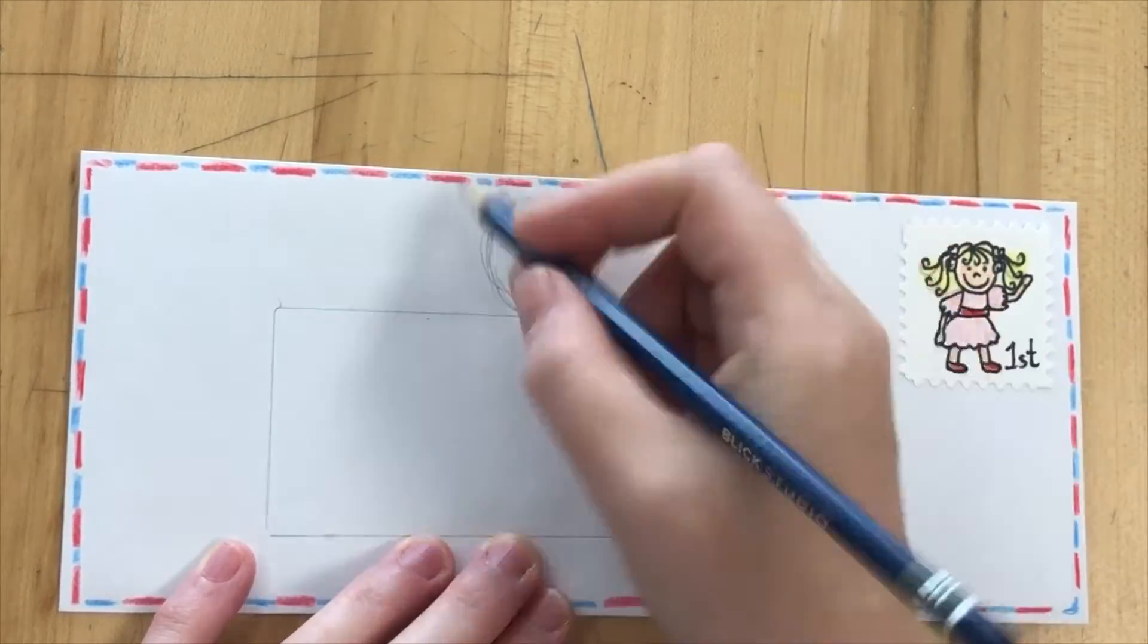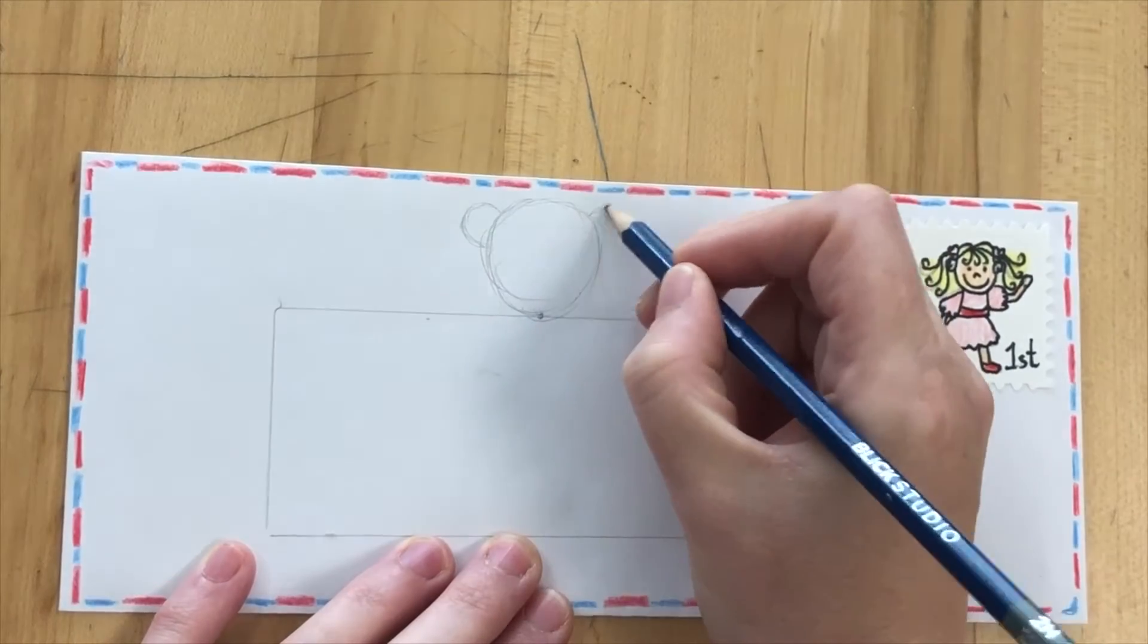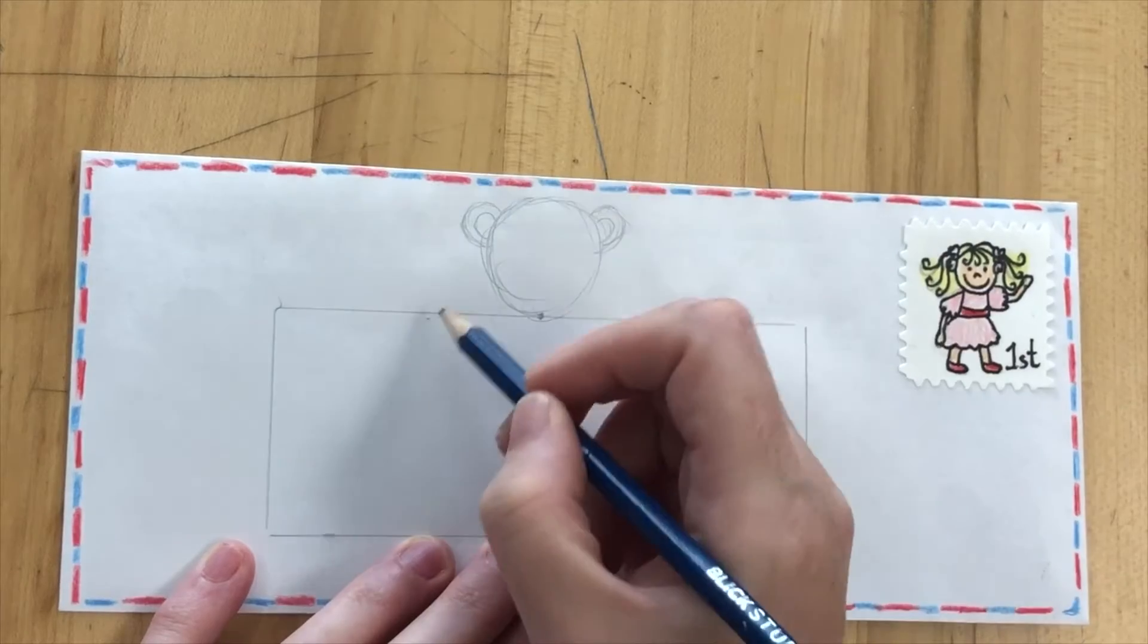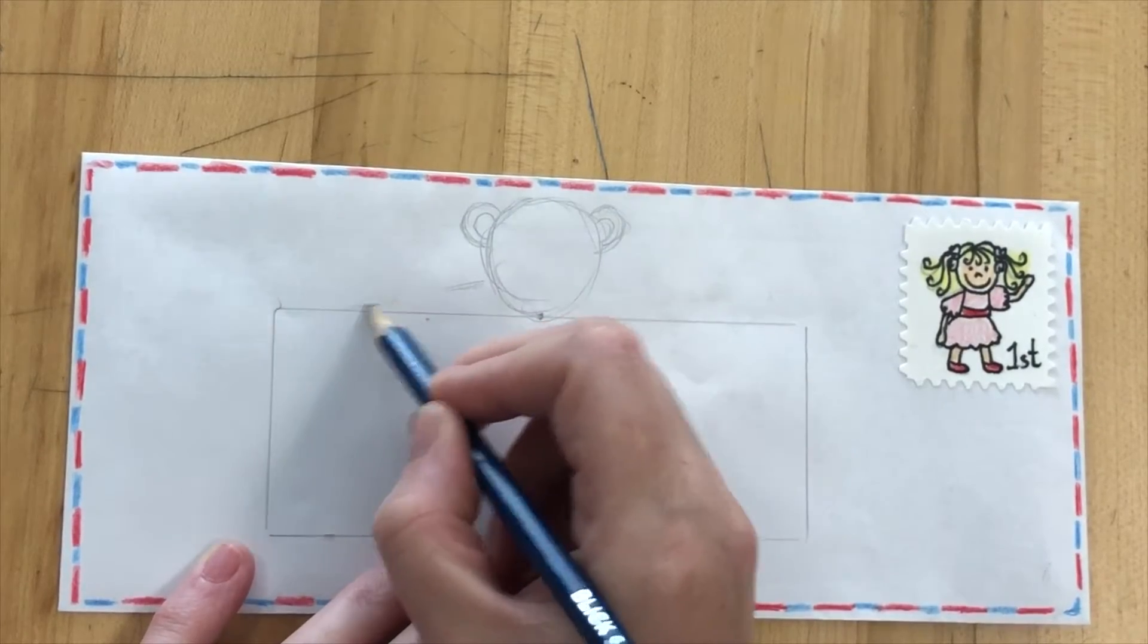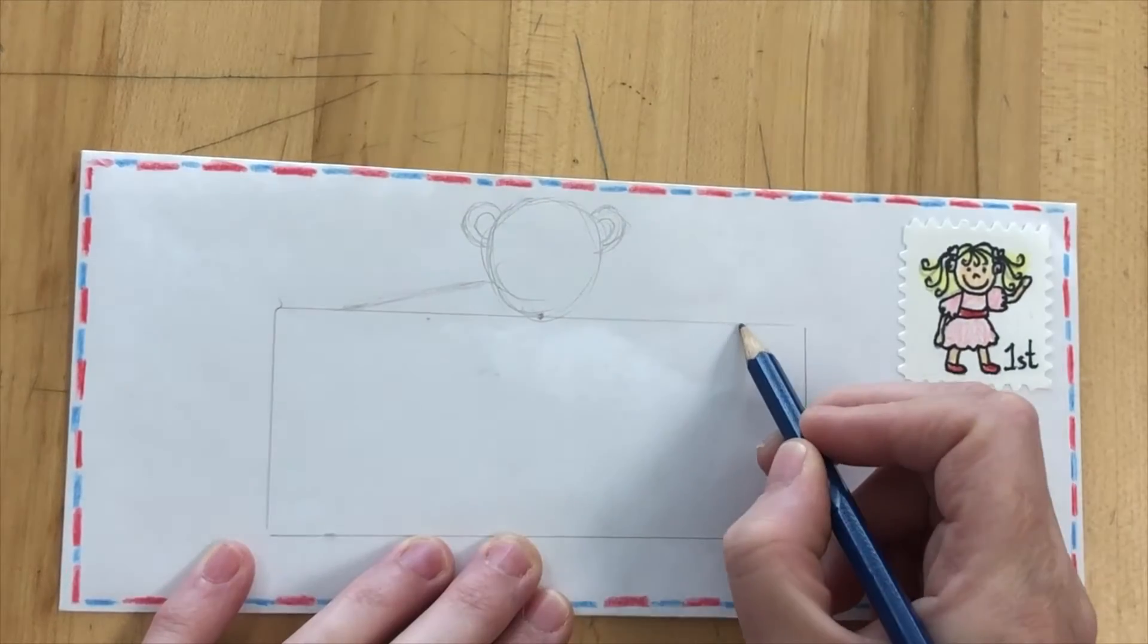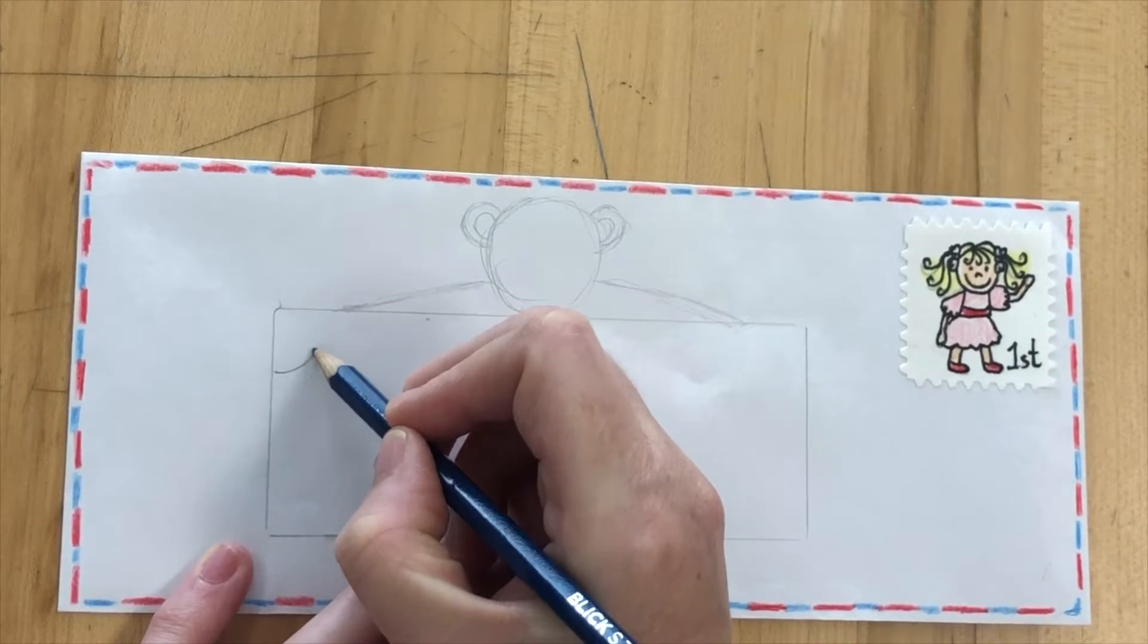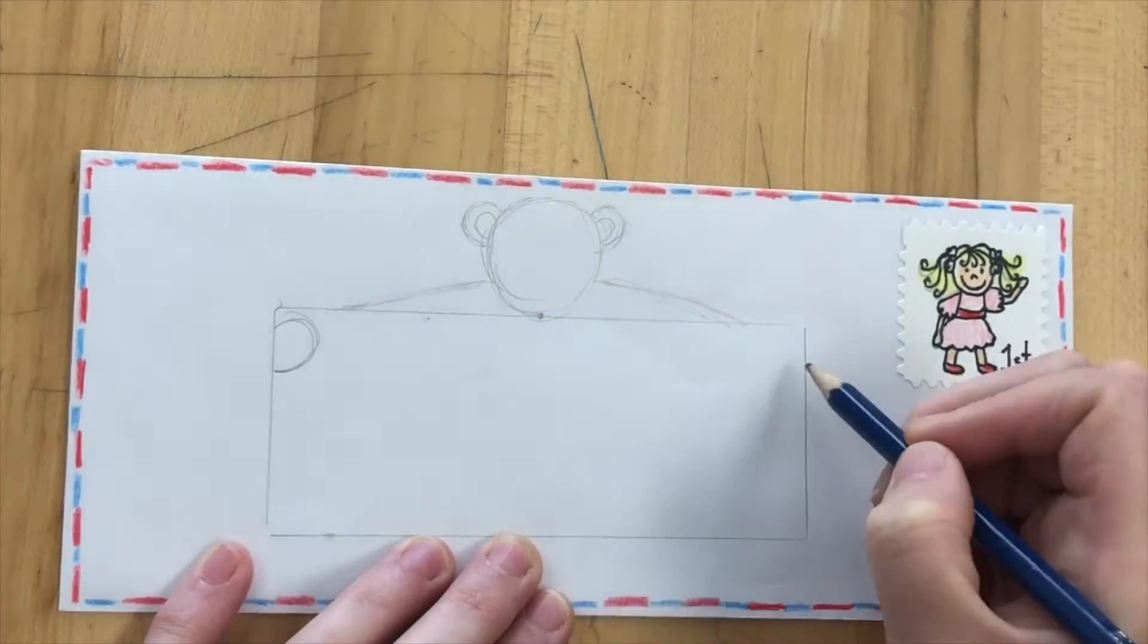A bear's head you can just do a circle and then the ears you do little bumps coming out the side. When you're doing the shoulders you need to make them stretch almost to the end of your rectangle because his arms are really long holding that address label.